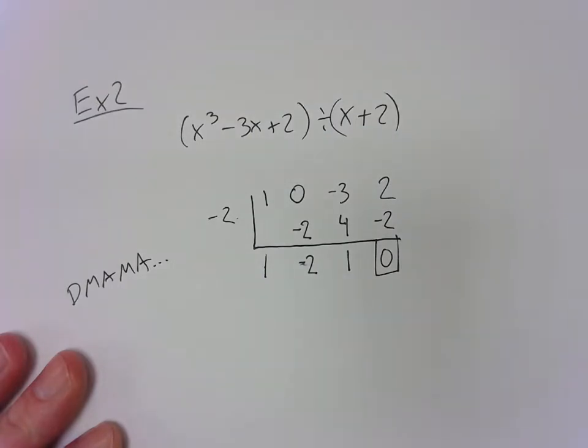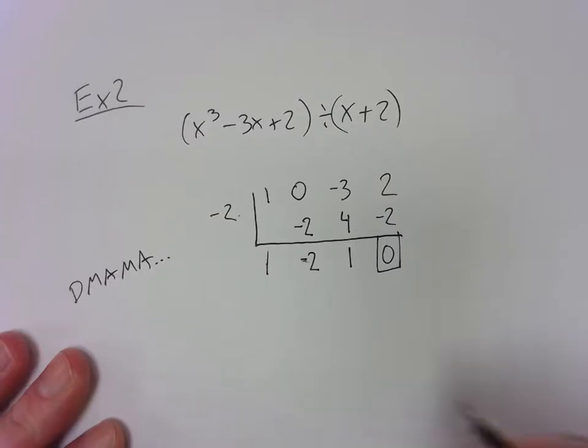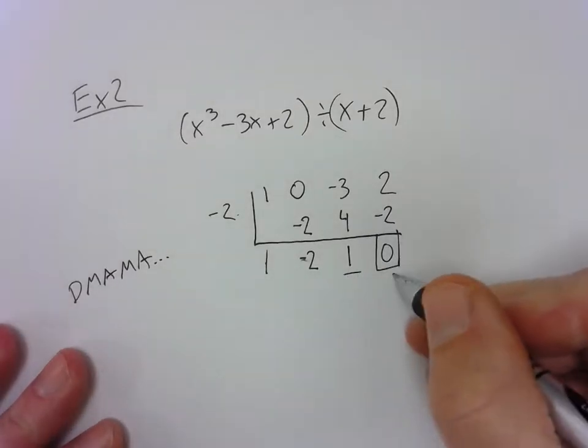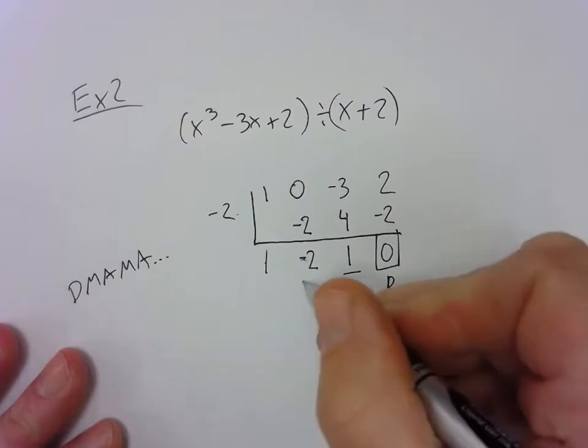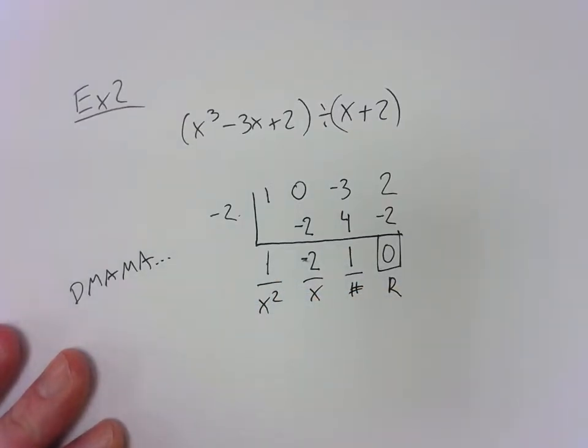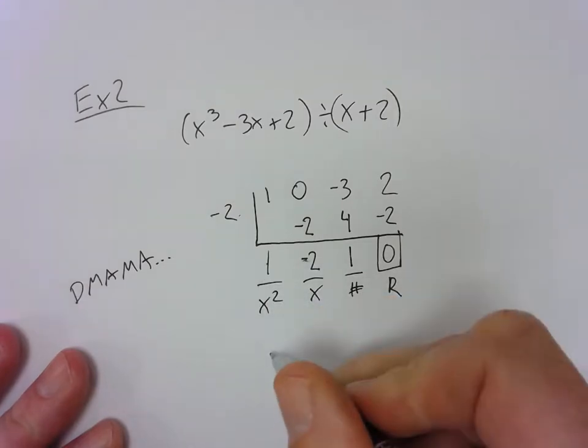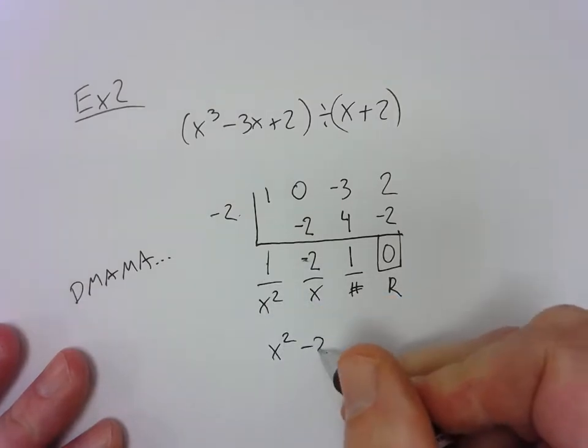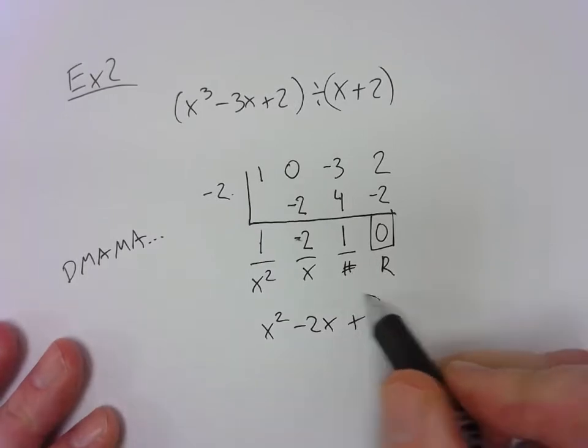Well, this one has a remainder of 0, so I don't have to do any fraction part to the end. So this would be the remainder. This is the number. This is the x. This is the x squared. And if there was another piece over there, it would be x cubed. 1x squared minus 2x plus 1 is my answer.